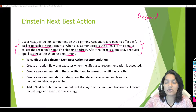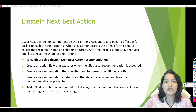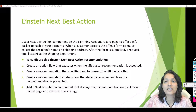We will deploy the Einstein Next Best Action component onto our account page. On every account record there will be a recommendation saying 'Do you want to accept a gift basket from us?' If the user says yes, a form will be displayed where they enter their shipping address, name, and other details. Once the user completes and submits the form, an email will be sent to the shipping department to dispatch the gift basket to the customer.